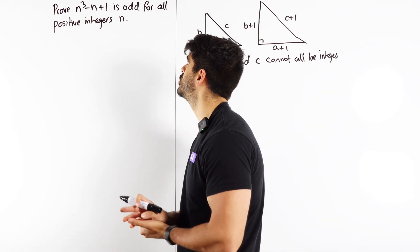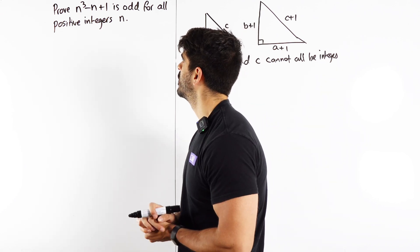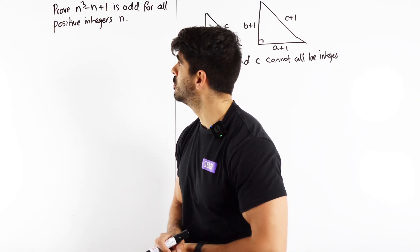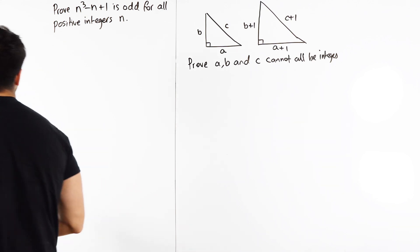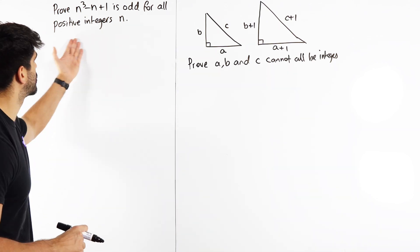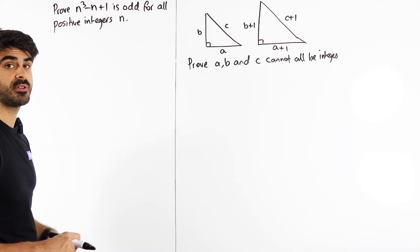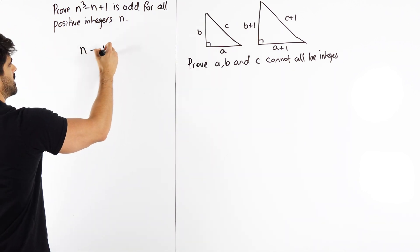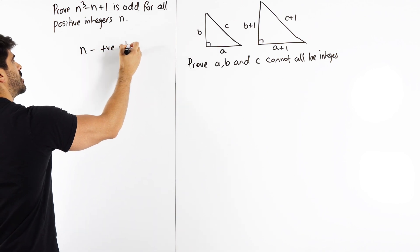The first one is saying prove n³ - n + 1 is odd for all positive integers n. Let's quickly go through the key algebraic expressions you need to know. They've already told you n is a positive integer, and that's always the case. So n is a positive integer or a whole number.